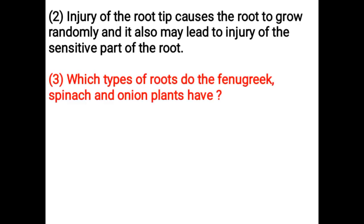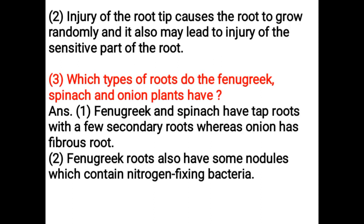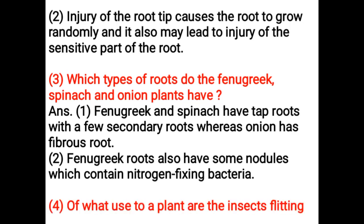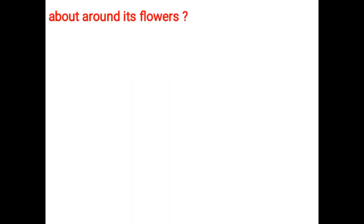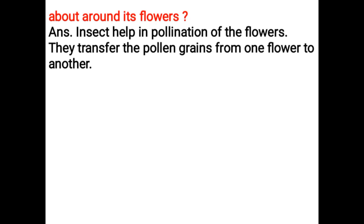Which types of roots do the fenugreek, spinach, and onion plants have? Fenugreek and spinach have tap roots with a few secondary roots, whereas onion has fibrous roots. Fenugreek roots also have some nodules which contain nitrogen-fixing bacteria. Of what use to a plant are the insects flitting about around its flowers? Insects help in pollination of the flowers — they transfer the pollen grains from one flower to another.